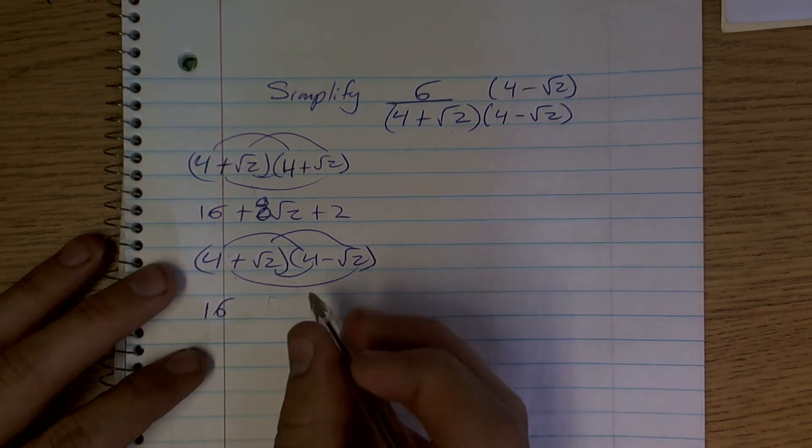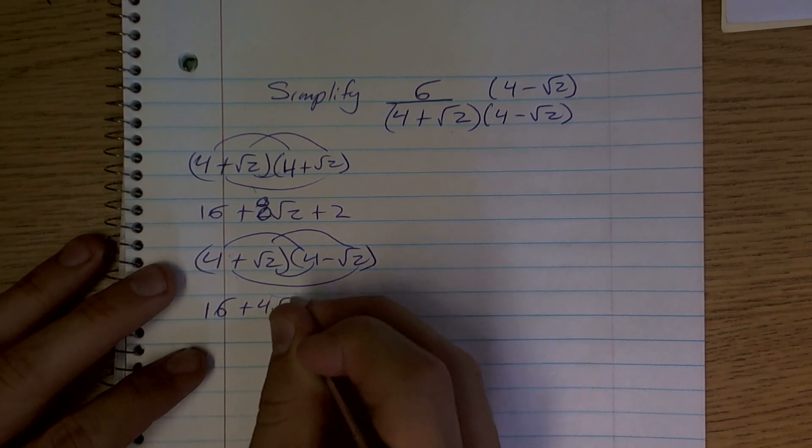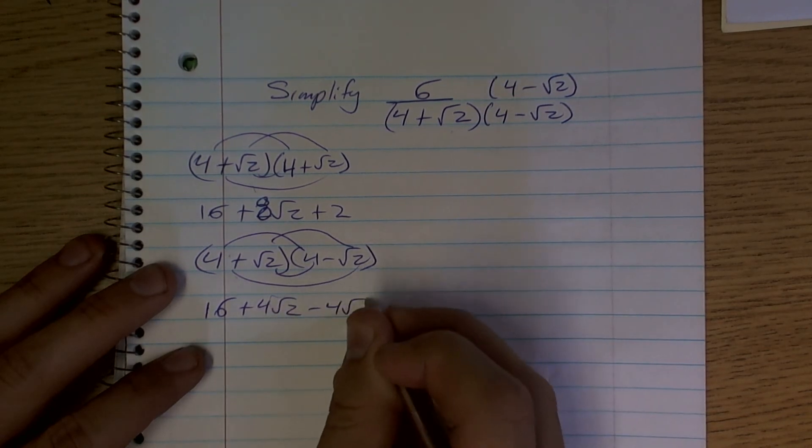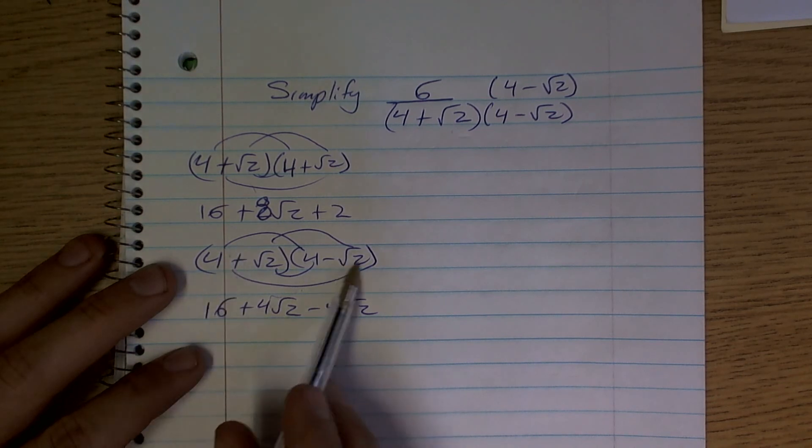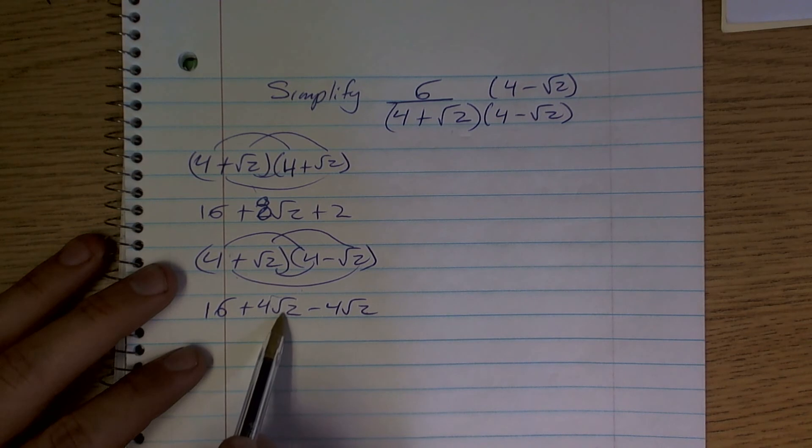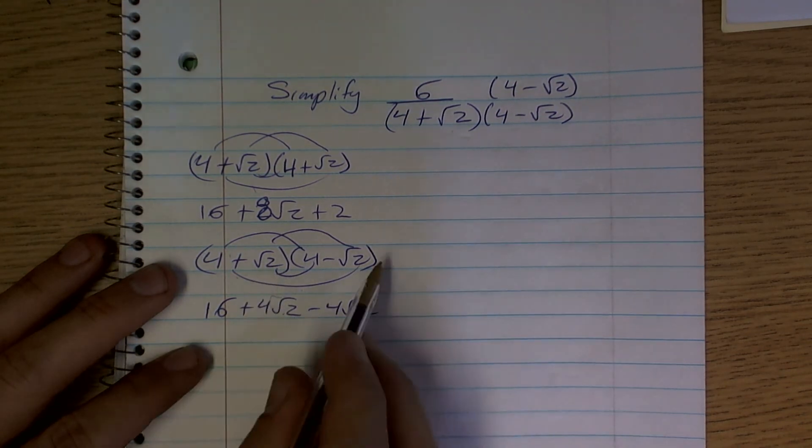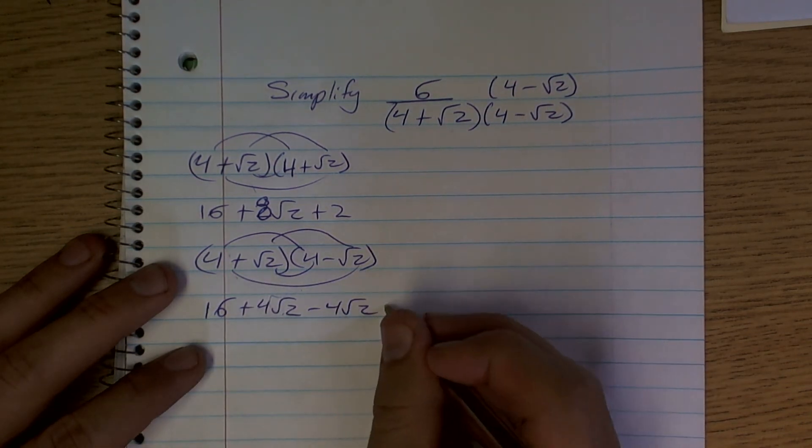Then 4 times negative radical 2 is going to give me plus 4 radical 2 minus 4 radical 2. When you do the outsides, 4 times negative radical 2 is a negative 4 radical 2. The inner is 4 times radical 2. And then radical 2 times radical 2 is going to give you a negative 2.